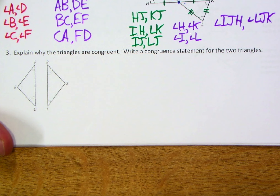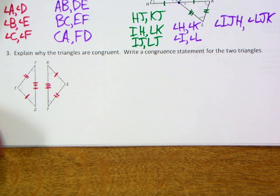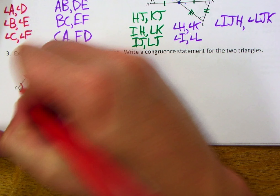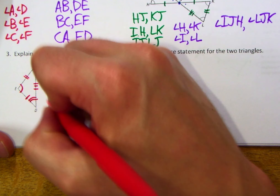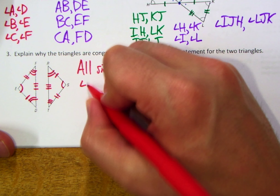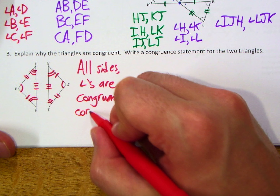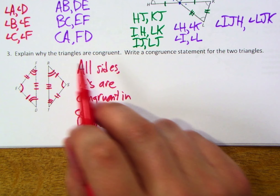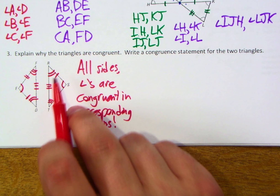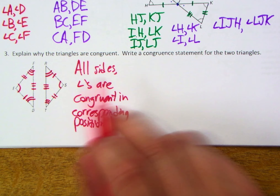Coming back: explain why the triangles are congruent. You may have noticed a single-single, a double-double, and a triple-triple. So all of the sides were congruent to a side in the other triangle. Likewise, we see the same is true of angles: a single arc, a double arc, and a triple arc. So all sides and angles are congruent in corresponding positions. You can double check — the single notch is between a single arc and a double arc, and same thing down here.